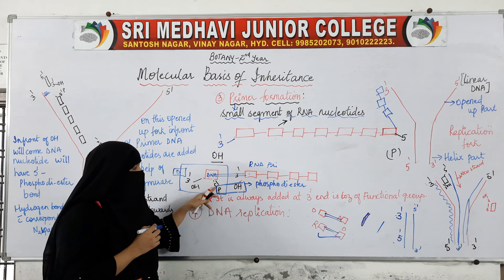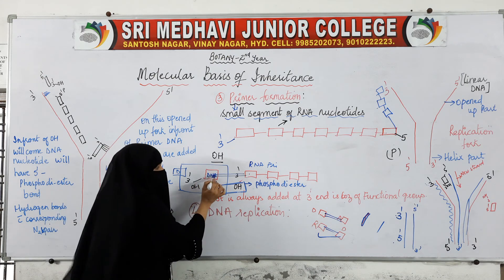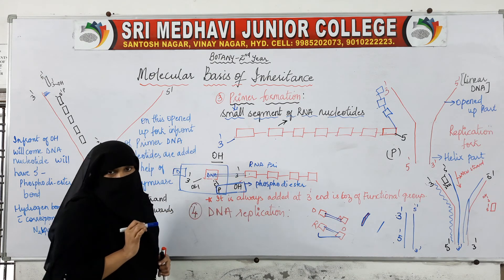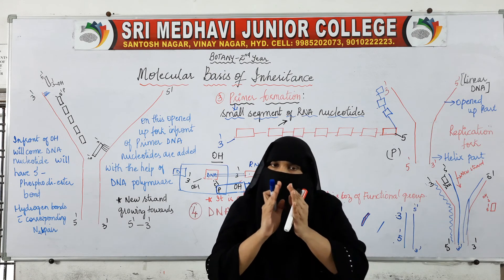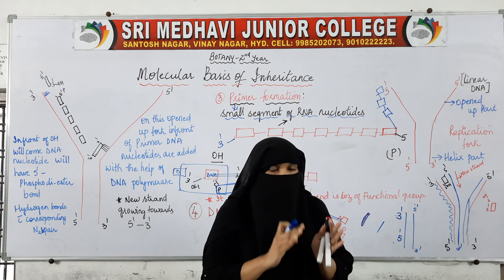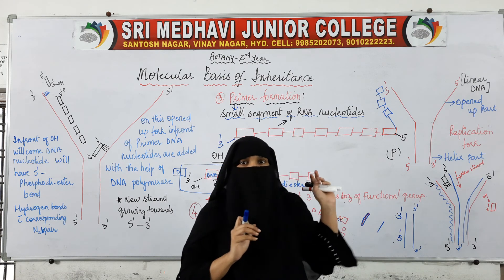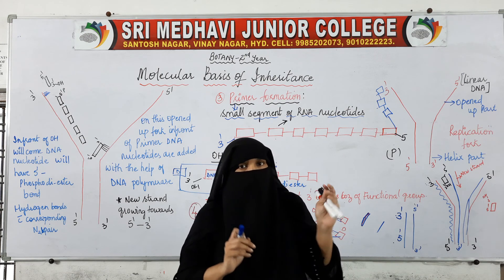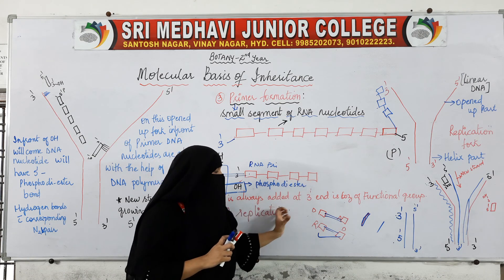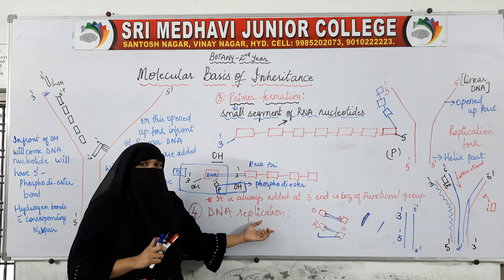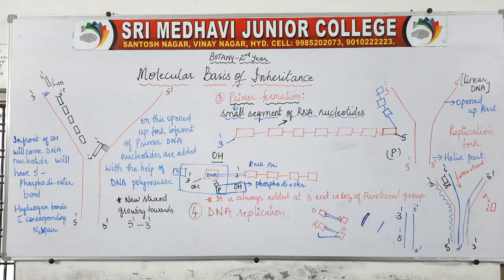So to summarize: activation of nucleotides, opening of the DNA strand, RNA primer formation, and after RNA primer formation, new DNA nucleotides are attached to the RNA primer. This was about the third step. The next step will be the actual DNA replication, which we will see in the next video.